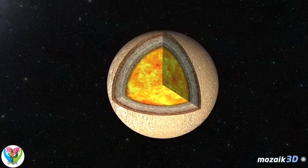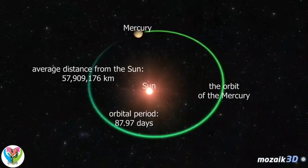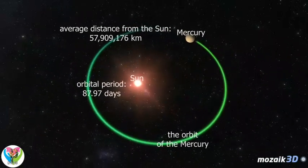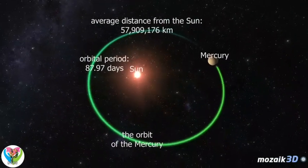When observed from Earth, Mercury is always close to the Sun, never moving further than 22 degrees from it, and has phases similarly to the Moon.